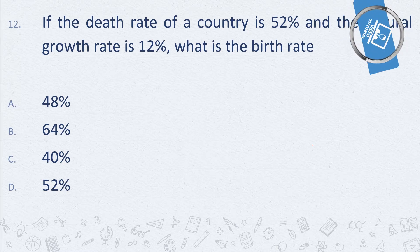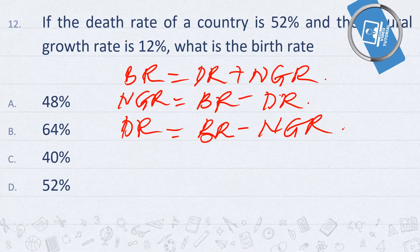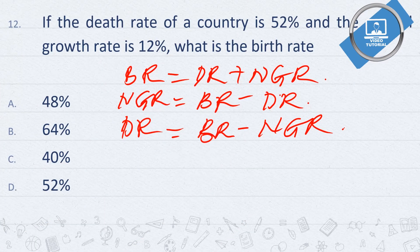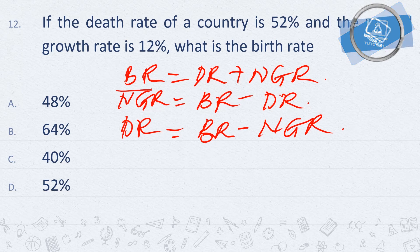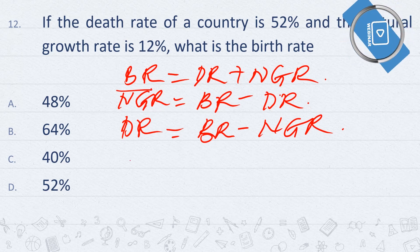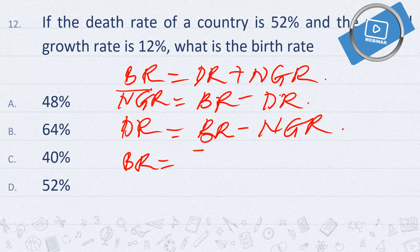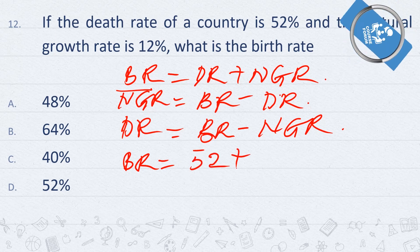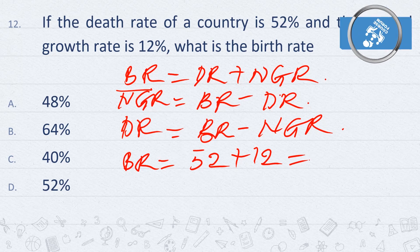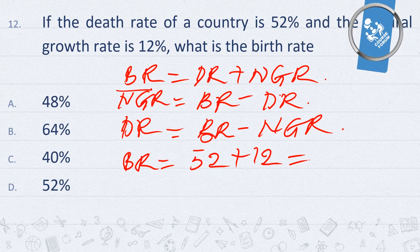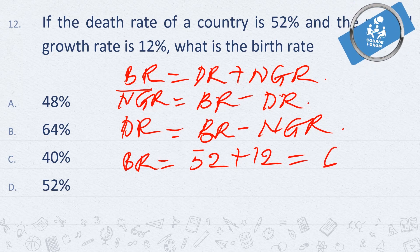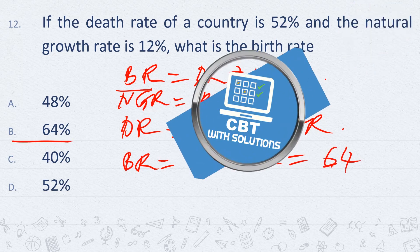Now, first and foremost, I think this is the formula that we use in answering this. What do we need to do here? We simply say birth rate is equal to 52 plus 12. And 52 plus 12 is equal to 64. So our answer here is 64, which is really simple.